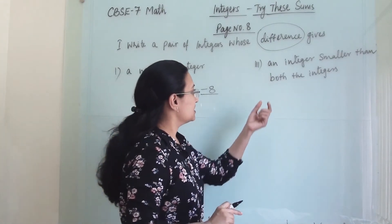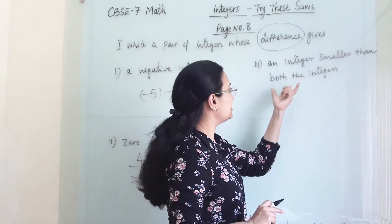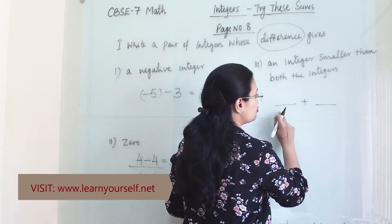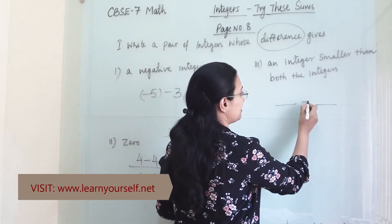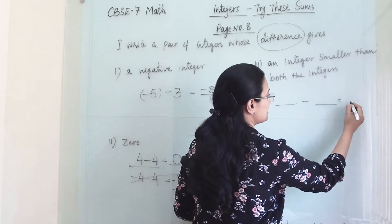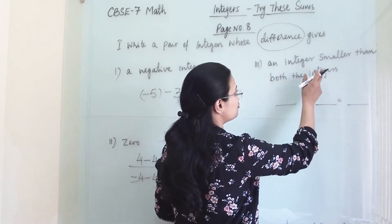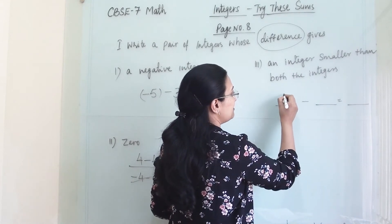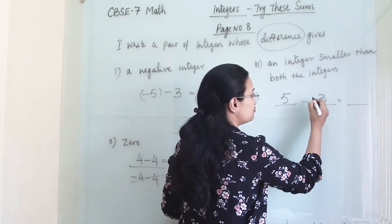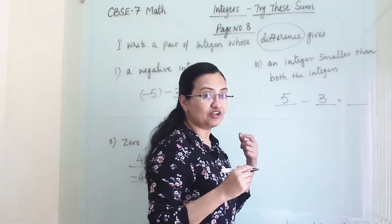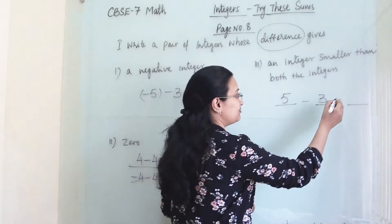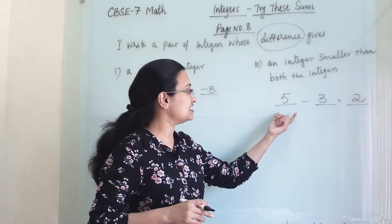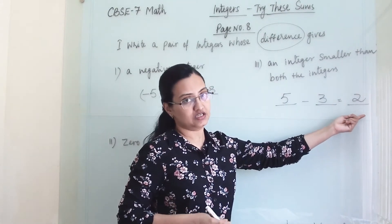Next, we need a pair of integers whose difference gives an integer smaller than both the integers. We choose two integers, subtract them, and the answer must be smaller than both. This is actually easy in subtraction — when we subtract any two integers, the answer we get is generally smaller than both the integers.